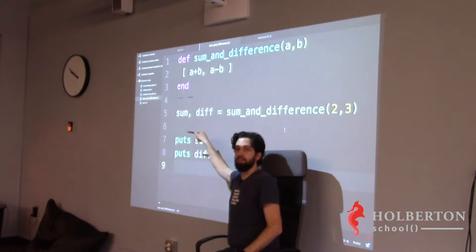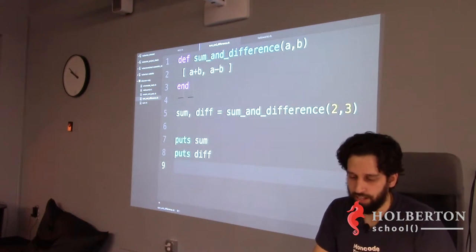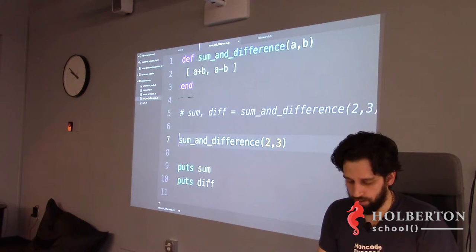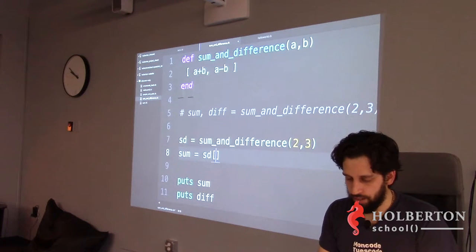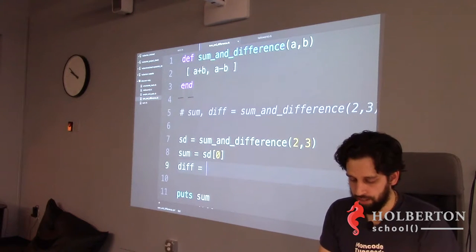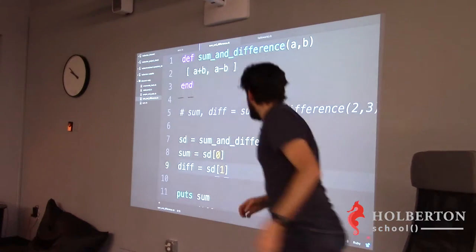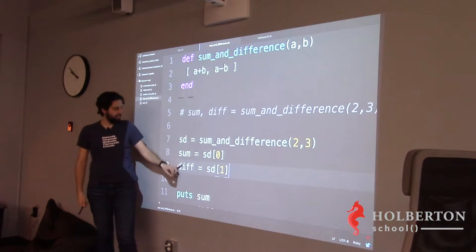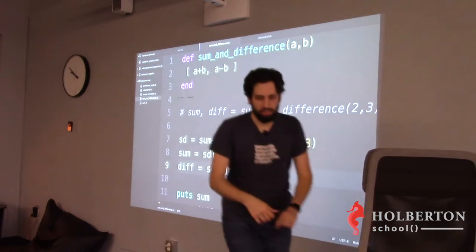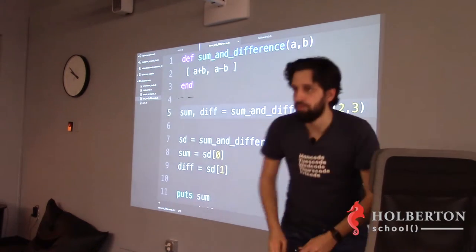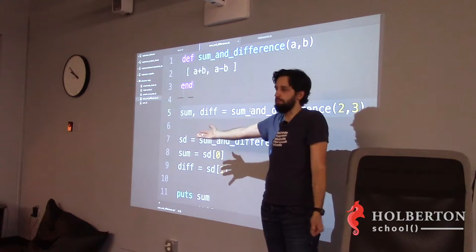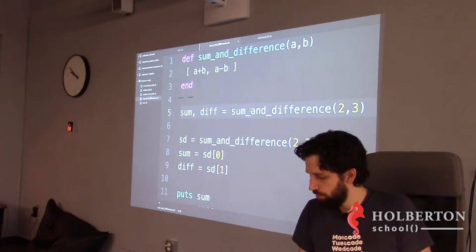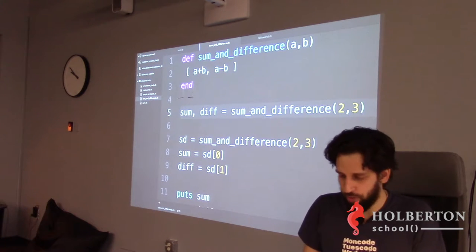You could unpack this the verbose way: `sd = sum_and_diff(5, 3)`, then `sum = sd[0]`, `diff = sd[1]`. But Ruby lets you write it much shorter with parallel assignment: `sum, diff = sum_and_diff(5, 3)` — you assign the returned array directly to multiple variables at once. That's a lot less work and just as readable.